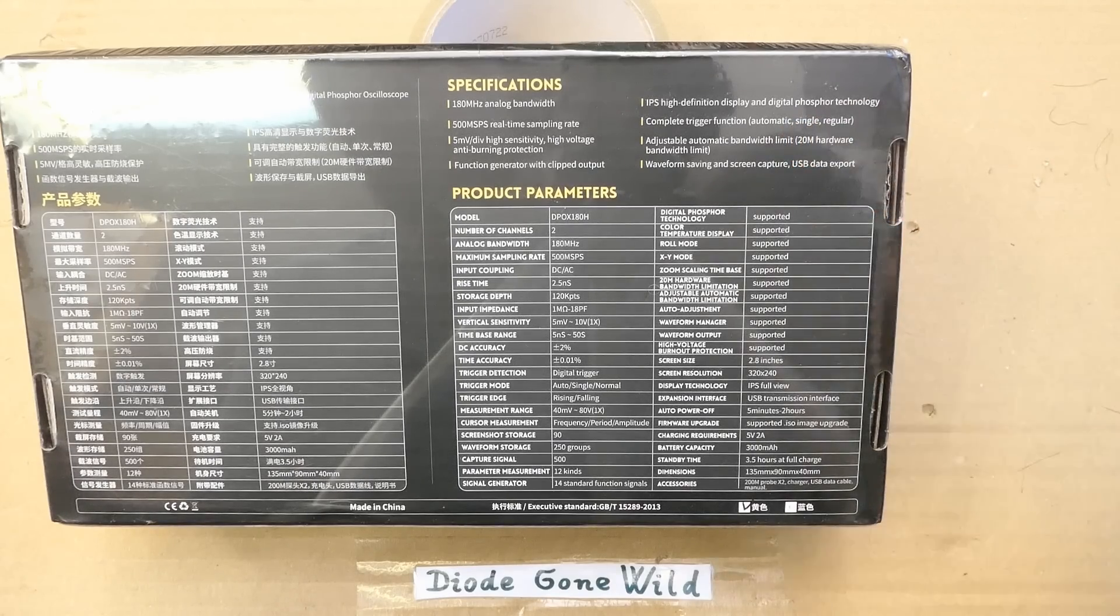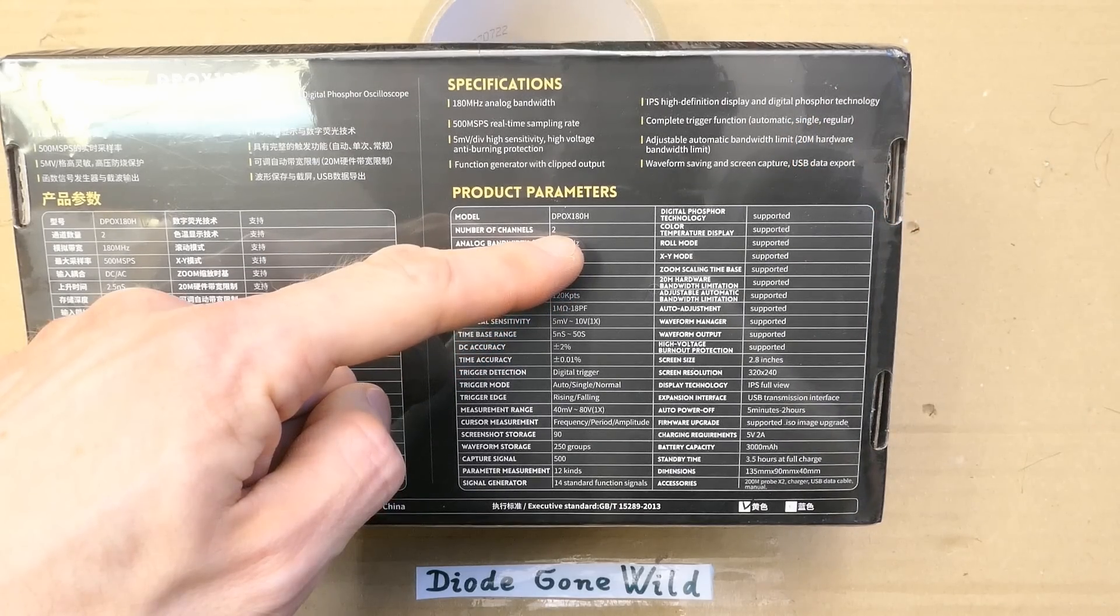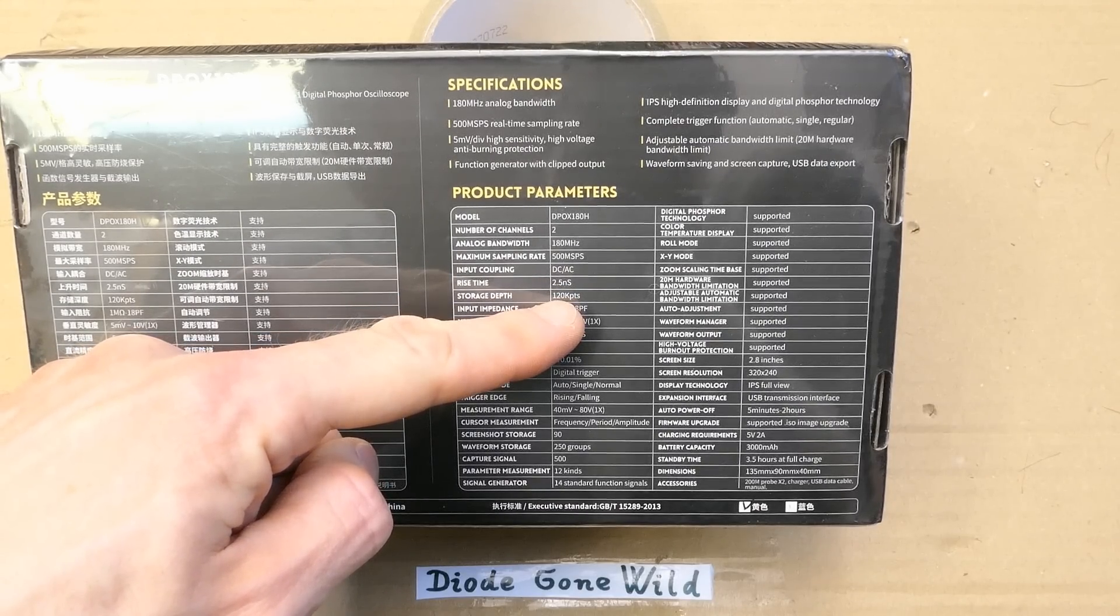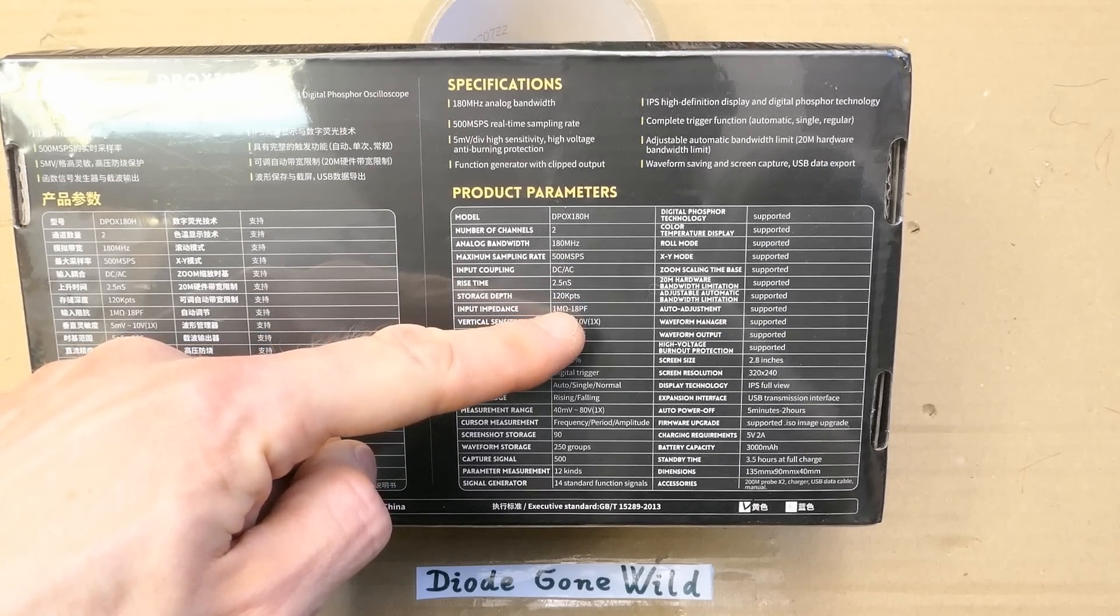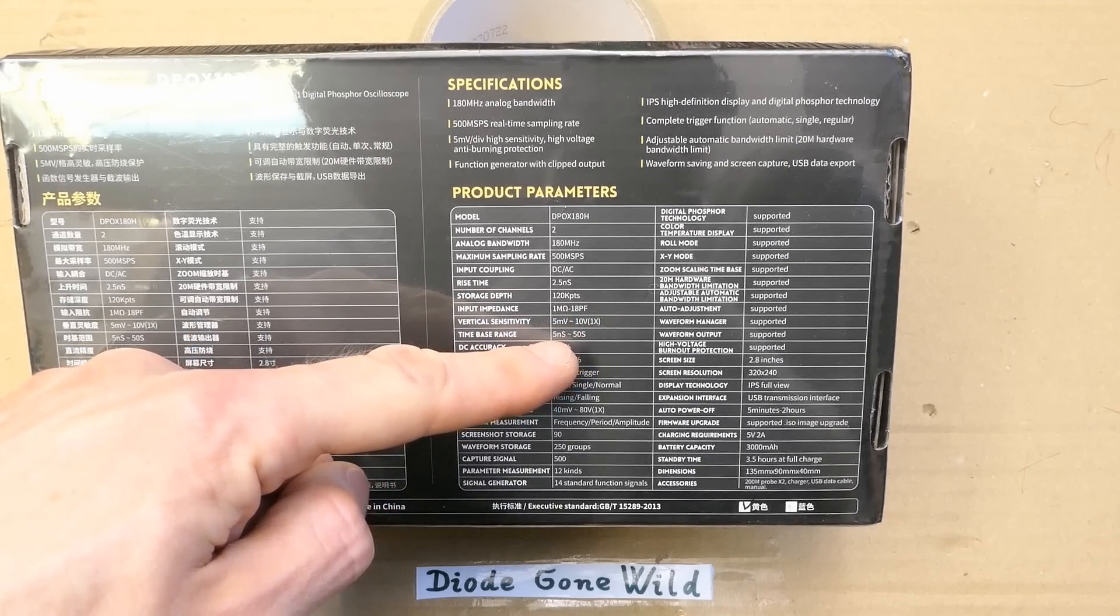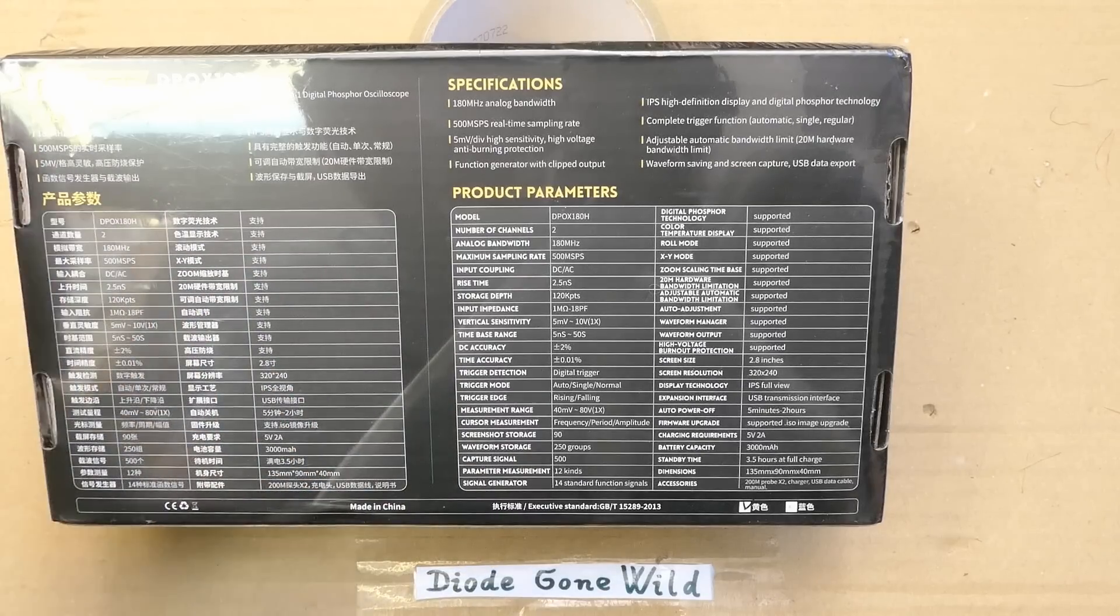It has two channels, a luxury for a small portable oscilloscope, 2.5 ns raise time, 120 kilopoints storage depth, 1 MΩ, 5 mV to 10 V per division, 5 ns to 50 second per division.